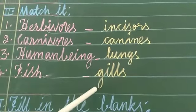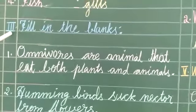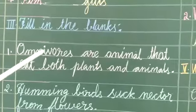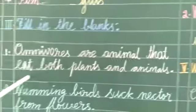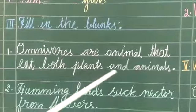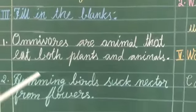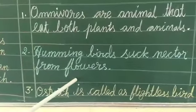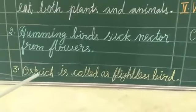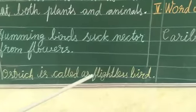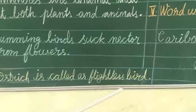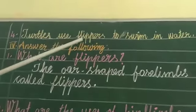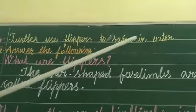Fish — Gills. Third Roman: Fill in the blanks. Omnivores are animals that eat both plants and animals. Hummingbirds suck nectar from flowers. Ostrich is called a flightless bird. Tortoises use flippers to swim in water.